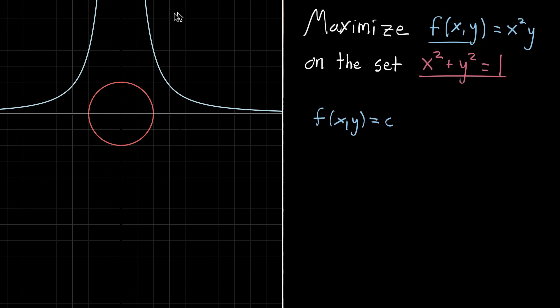So for high values of c, the contour would look something like this. This is where the value of x squared times y is big. And then for small values of c, the contours would look like this. So all the points on this line would be f of xy equals like 0.01 in this case.